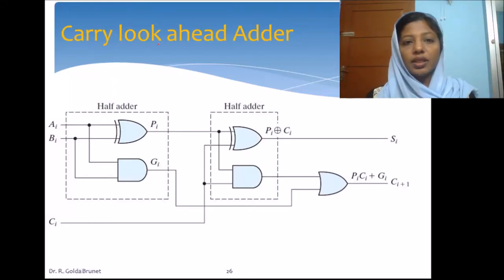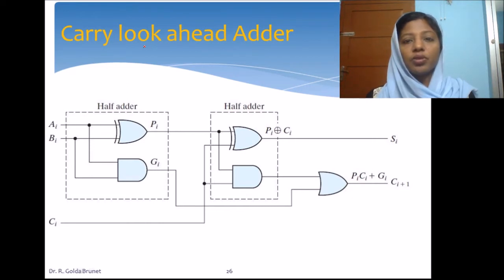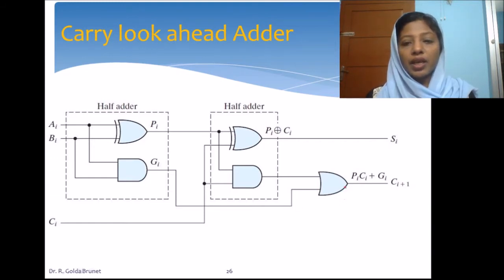The next circuit is the carry look-ahead adder. In this adder we are trying to reduce the delay associated with the carry. The delay in the addition seen with the binary adder is due to the carry bit, since every full adder has to wait for the carry input from its previous full adder. It takes 3 units of time for every full adder to give the carry to the next bit. To avoid this delay, if we are able to generate the carry as soon as we supply the inputs, then it is easy to predict the carry and add those inputs together all at once. This is the principle of the carry look-ahead adder.